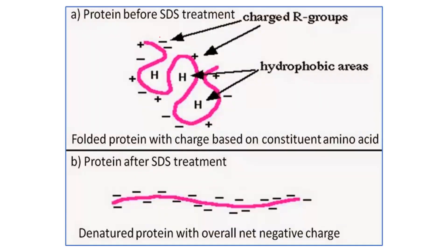The rate of migration of SDS-treated proteins is effectively determined by their unfolded length related to their molecular weight. A protein with folds has amino acids carrying different charges — some positive, some negative. When treated with SDS, it linearizes. The protein is denatured and the overall net charge becomes negative. In native form, the net charge depends on what kind of amino acids are present. When you treat it with SDS, you make them uniformly negatively charged and linearized.